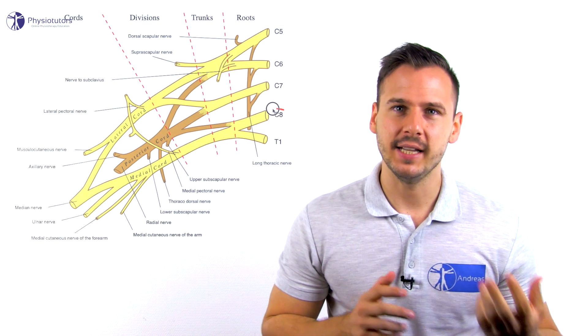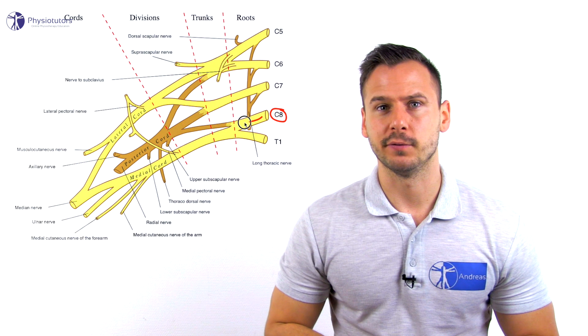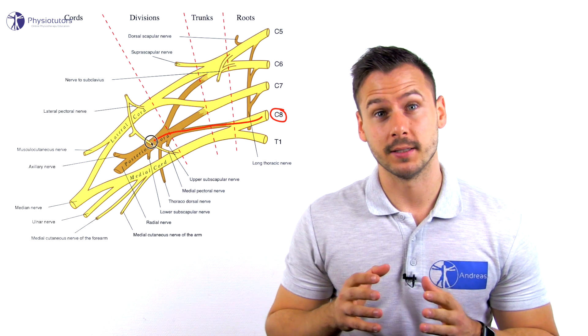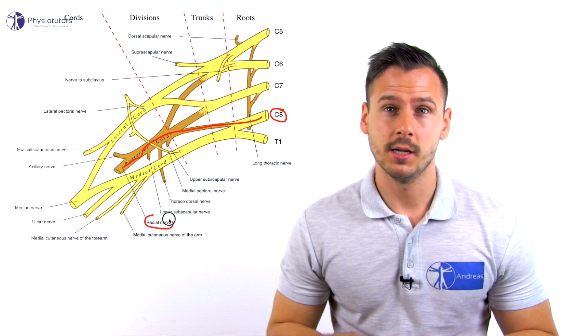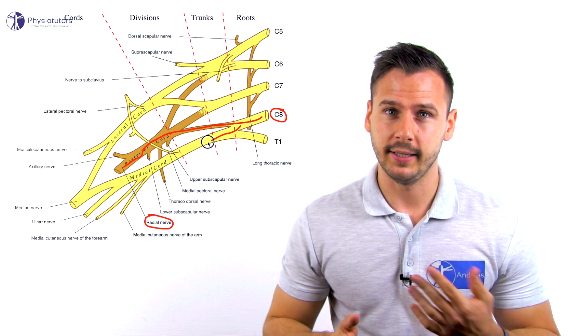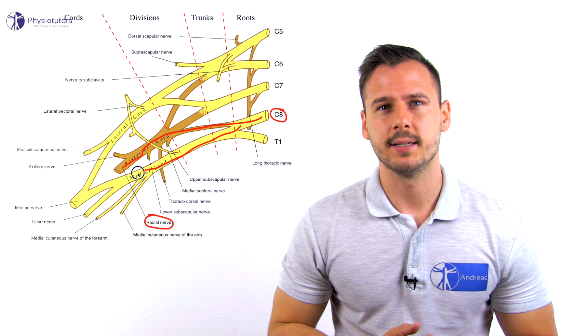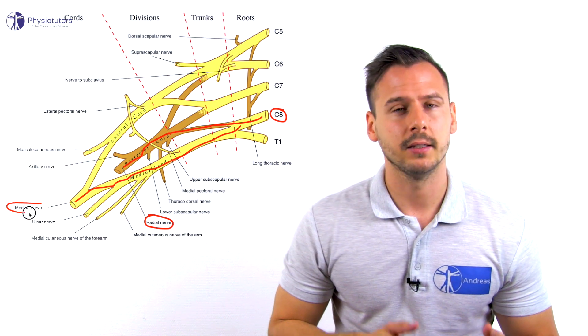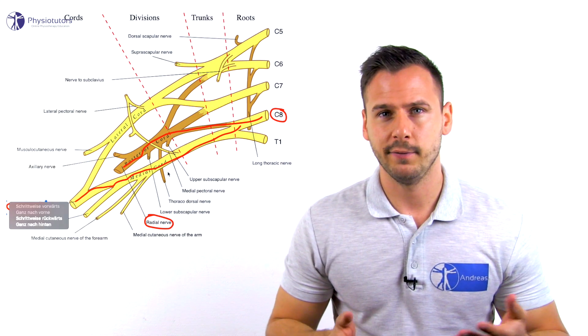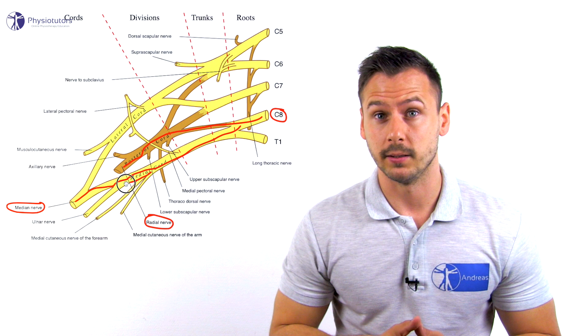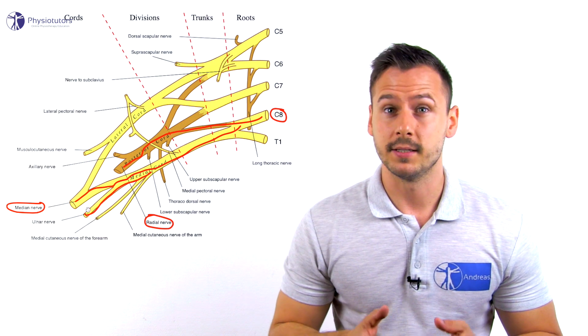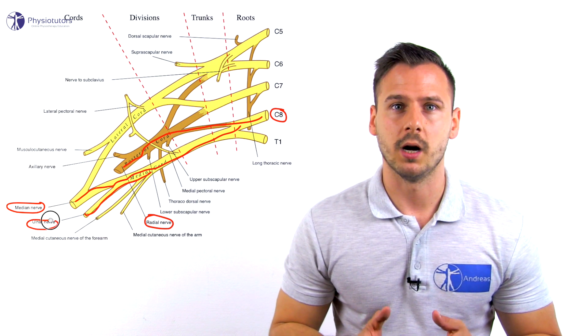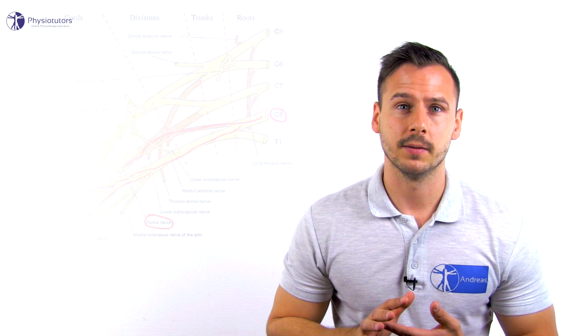First of all, real atrophy is rare in radiculopathy unless it's long-lasting. As the C8 spinal nerve root is present in all peripheral nerve branches, partial or incomplete weakness may be present in muscles that are innervated by, for example, the median nerve as well. This is important regarding the intrinsic hand muscles.